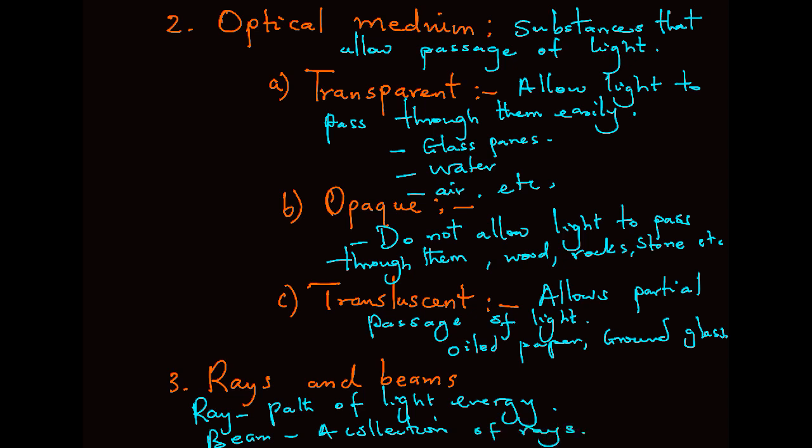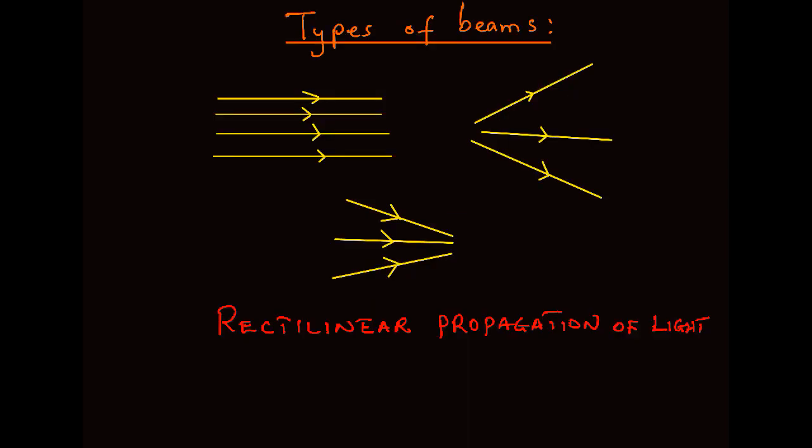So we have various types of beams. We have parallel beams, and we also have divergent beams and convergent beams.